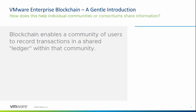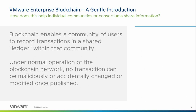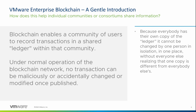Blockchain enables a community of users to record transactions in a shared ledger within that community. Under normal operation of the blockchain, no transaction can be maliciously or accidentally changed or modified once published. This is the advantage for many people in blockchain — it's this data integrity or immutability. And because everybody's got their own copy of the ledger, it can't just be changed by one person in isolation in one place without everybody else realising that one copy is different from everybody else's.